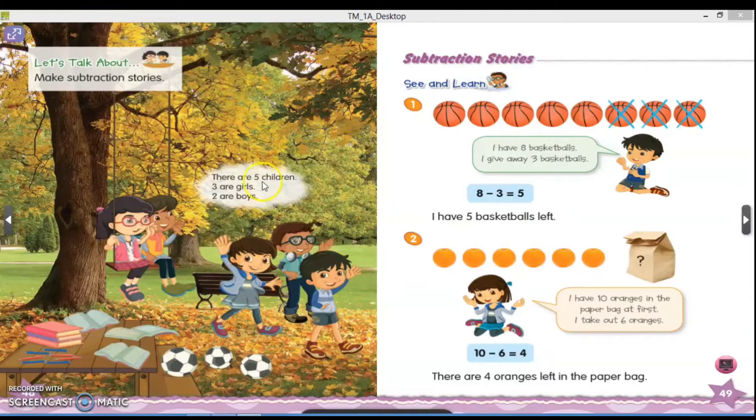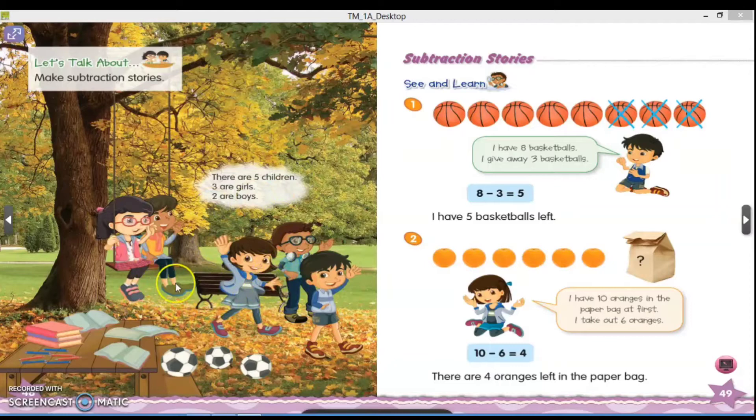There are five children. Three are girls and two are boys. Jadi teman-teman, dari gambar ini bisa teman-teman lihat, ada lima anak yang sedang berada di taman. Tiga orang anak, yaitu anak perempuan. Dan dua orang anak adalah anak laki-laki.